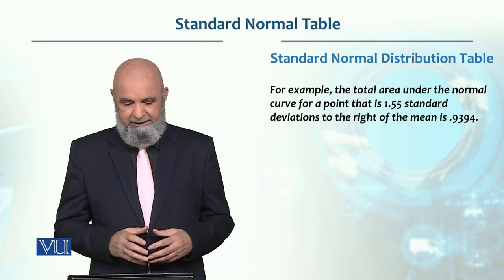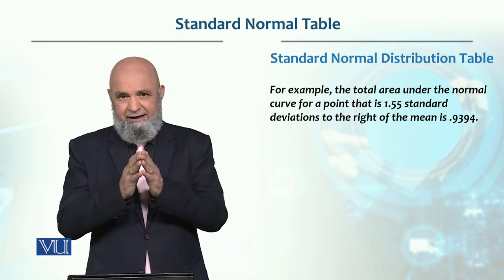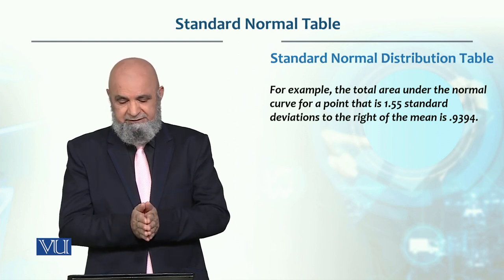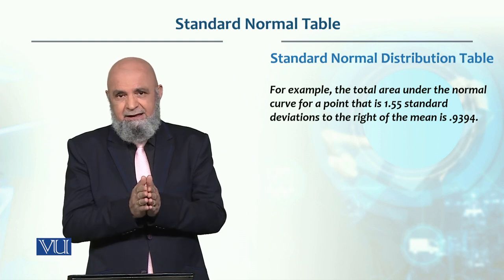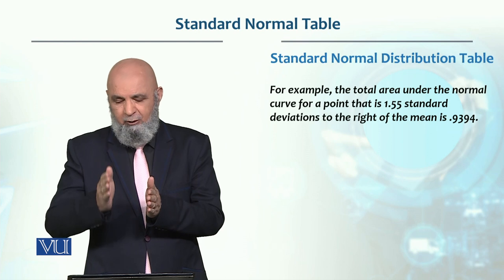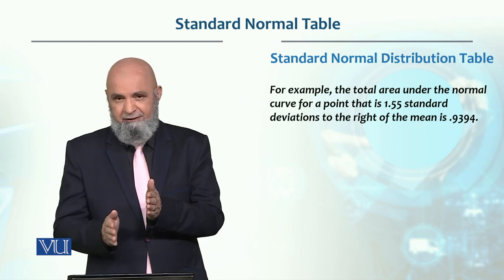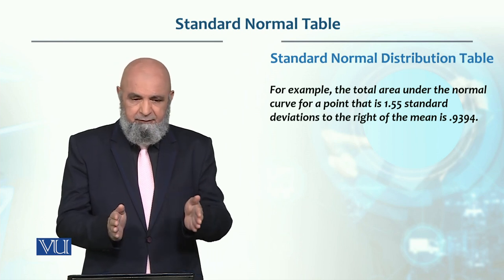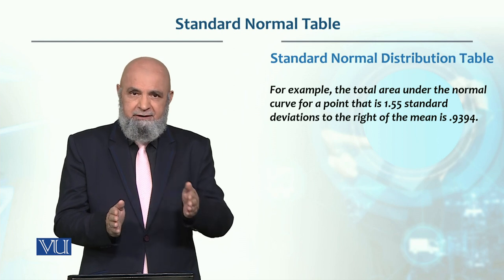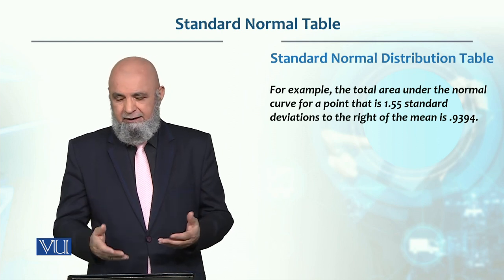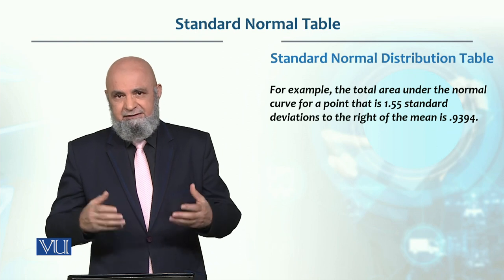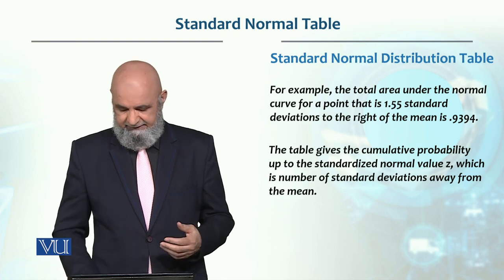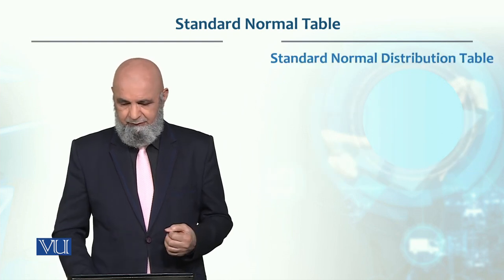What does that mean? The mean value in the standard normal table is 0, and on the right side, the value falls at 1.55 standard deviations. The area under the normal probability curve in this case is 0.9394, which we can see directly in the table.